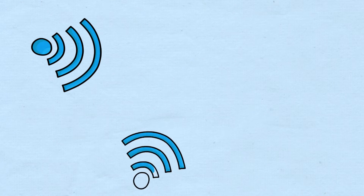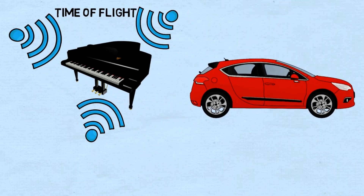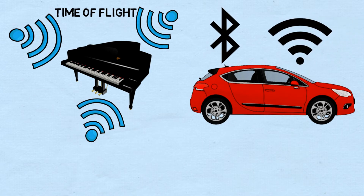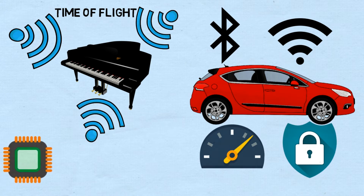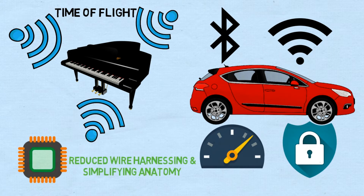RF-based detectors in industries allow 3D mapping of objects using the time-of-flight concept. Sensor integration in automobiles is now well equipped with Bluetooth, Wi-Fi, auto theft alarms, and many features. In automotive applications, advanced driving assistance systems are now integrated on a single chip, which reduces wire harnessing and simplifies the anatomy of cars.